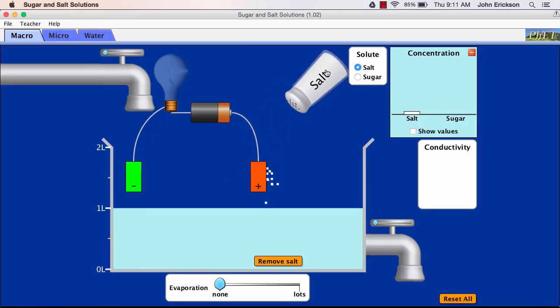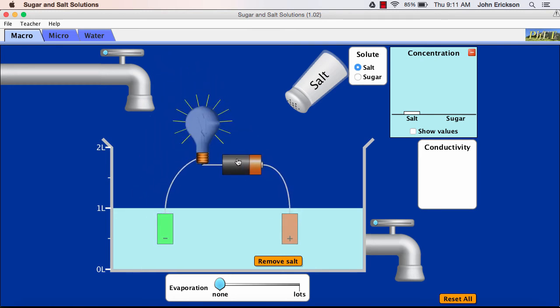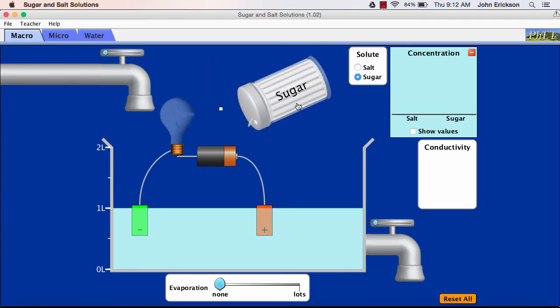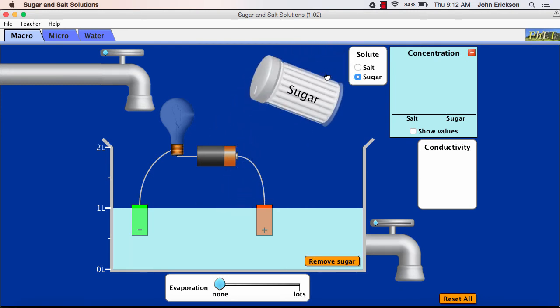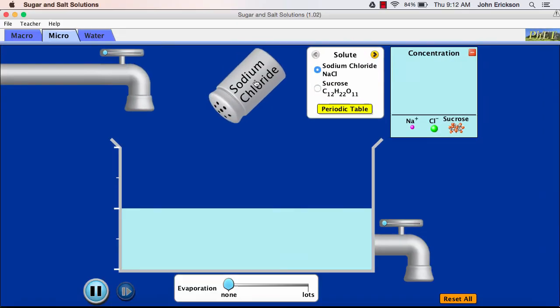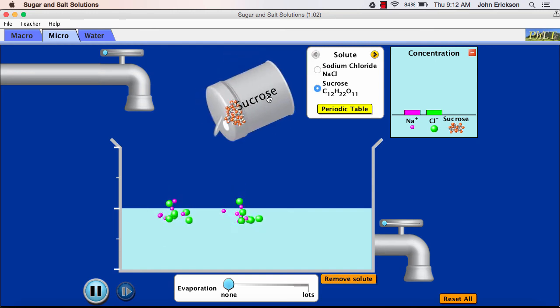To summarize, some solids that dissolve in water create a solution that carries electricity, called an electrolyte, while other solids that dissolve form non-electrolytes. And this all depends on the particles that form during the process.